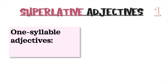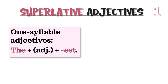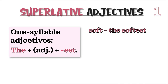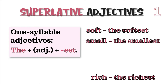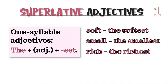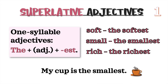Superlative Rule 1: One syllable adjectives. Add the article the, plus the adjective, plus -est. For example: soft → the softest; small → the smallest; rich → the richest. Example sentence: My cup is the smallest.